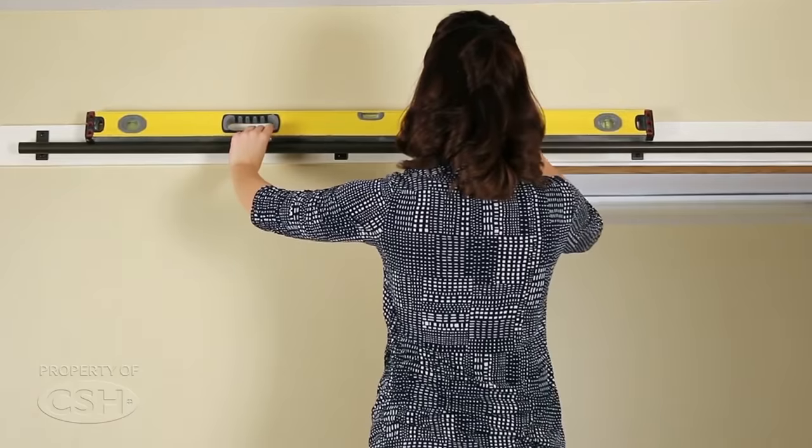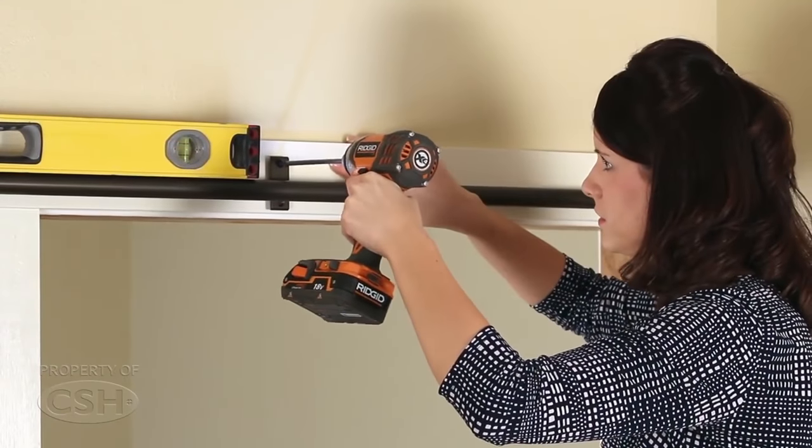Fasten one end bracket, then using a level, align the rail and fasten the rest of the brackets to the header.